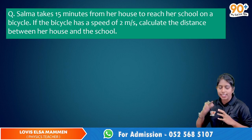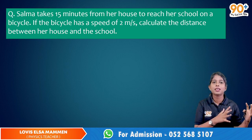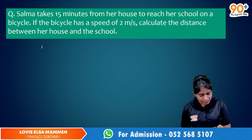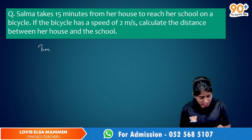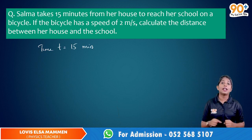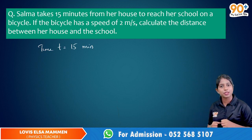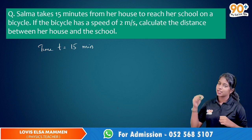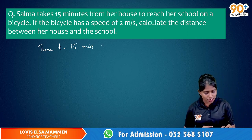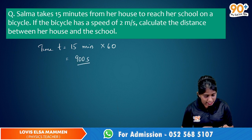It is given that Salva is taking 15 minutes to reach school. So time t is given as 15 minutes. Now we need to convert this value to seconds. We know that 1 minute is equal to 60 seconds, so here it is 15 minutes — just multiply it with 60. Therefore the answer will be 900 seconds.